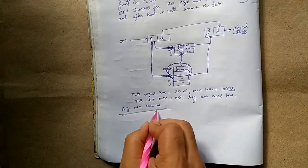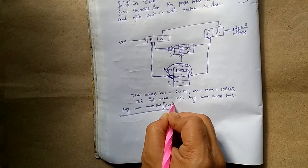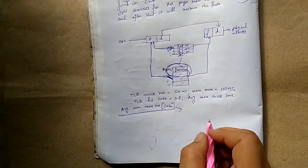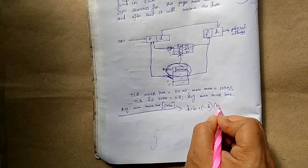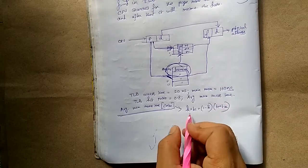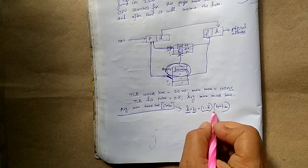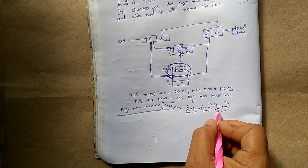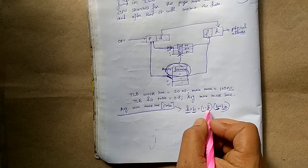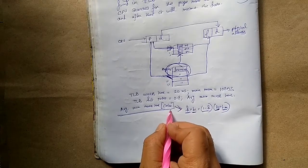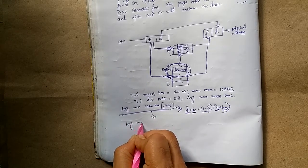Recall that for cache memory the formula was: h × tc + (1 − h) × (tc + tm), where h is the hit ratio, tc is the time to access from cache, (1 − h) is the miss ratio, and tm is the time to access from main memory. Using this similar concept we compute the average memory access time for TLB.